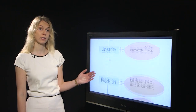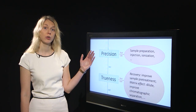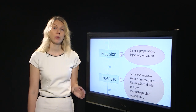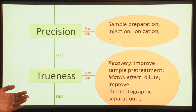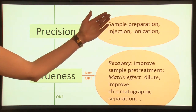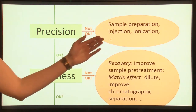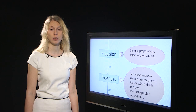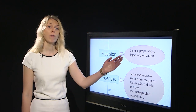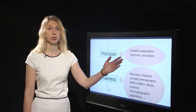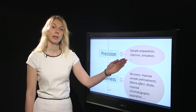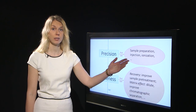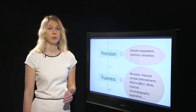However, if linearity is acceptable we can move on with the validation to precision. If for some reason the precision is not acceptable, first you should try to find out which part of your method causes this inacceptability — does it come from the sample preparation, from the injection, or is the problem in the ionization? If you have found the root cause of poor precision, then you should make modifications to that specific part of your method. However, if modifications are made, these may significantly influence previously evaluated validation parameters and you should start the validation from the beginning.